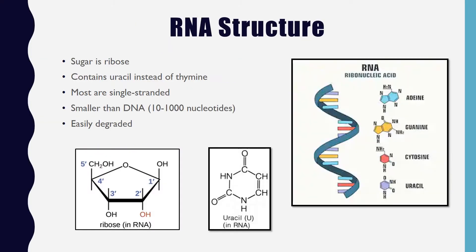The structure of RNA differs from DNA in that it is single-stranded, its pentose sugar is ribose, and it contains uracil instead of thymine. RNA is also smaller than DNA, containing tens to thousands of nucleotides rather than millions like in DNA. It is also easily degraded, where DNA is more stable. In the image of ribose, you can see the OH group highlighted in red — that's how you distinguish ribose from deoxyribose, as DNA will not have that oxygen, only the hydrogen.